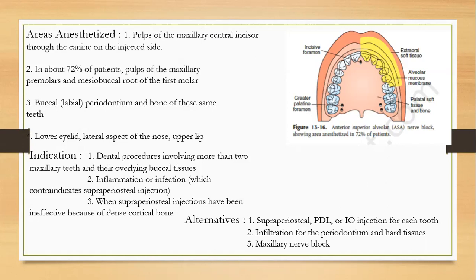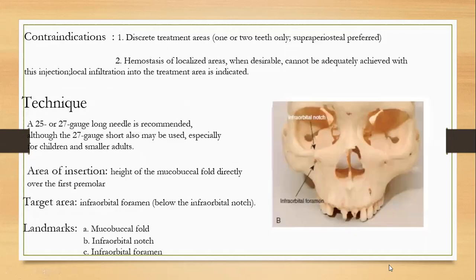Indications include dental procedures involving more than two maxillary teeth and their overlying buccal tissues, inflammation or infection which contraindicates supraperiosteal injection, and when supraperiosteal injections have been ineffective because of dense cortical bone. Alternatives include local infiltration for each tooth, infiltration with a combination technique, and the maxillary nerve block.